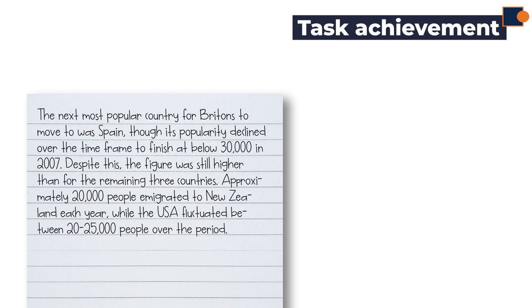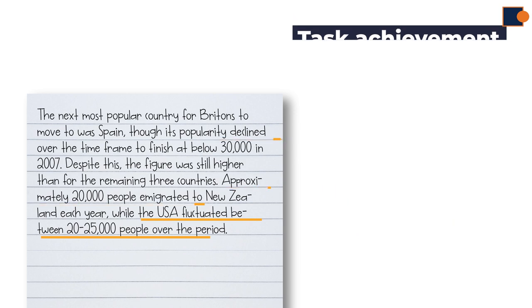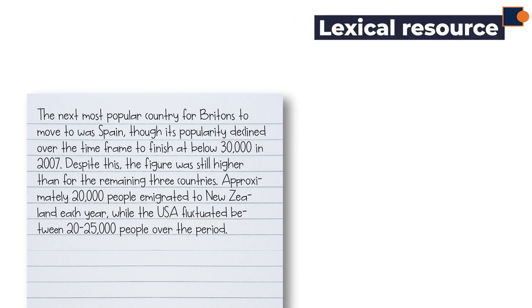The comparisons are: the next most popular country, higher than the remaining three countries. Key features are its popularity declined over the time frame, approximately 20,000 people emigrated to New Zealand, and the USA fluctuated between 20 and 25,000 people over the period.